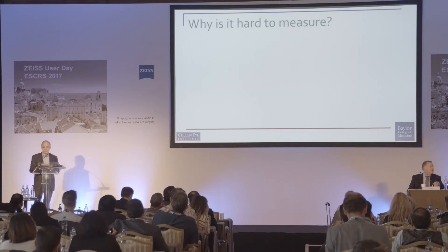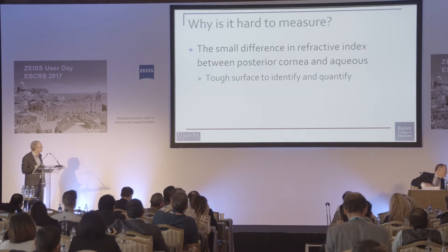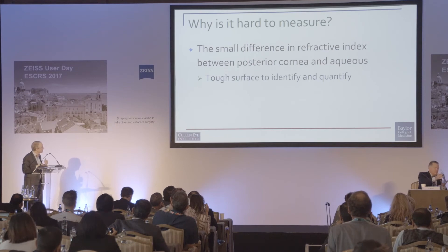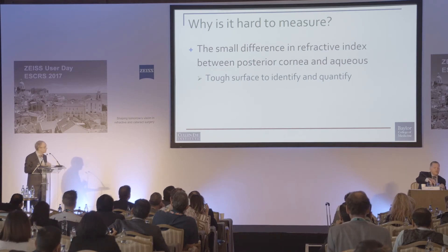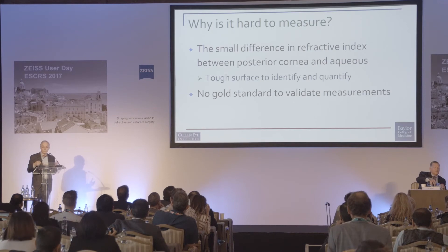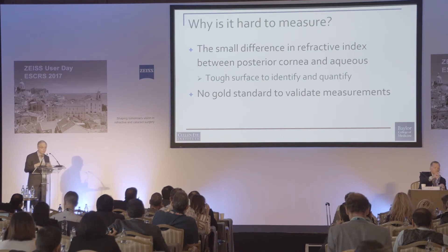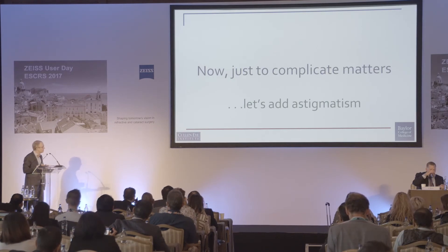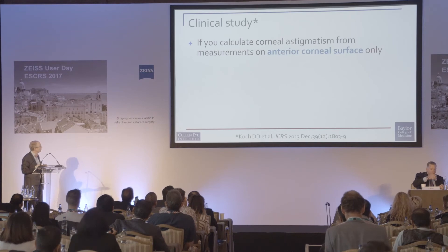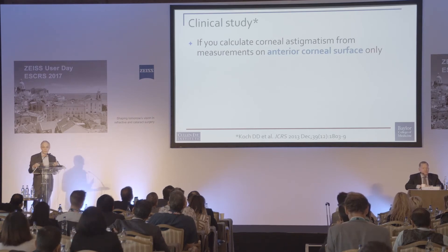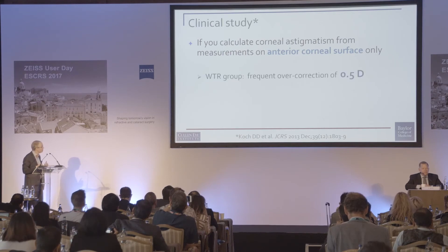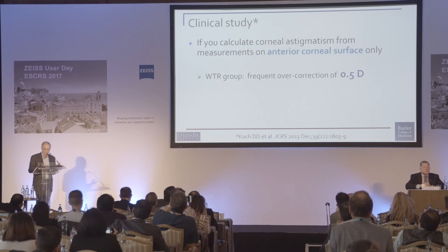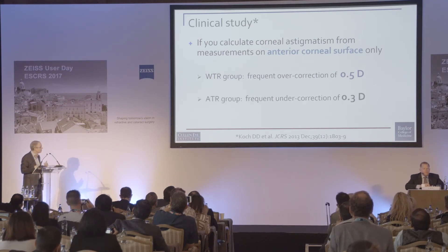Why is the posterior cornea hard to measure? Because there's such a small difference in the refractive index between the posterior corneal surface and the aqueous, so it's tough to identify and quantify that surface — and there's no gold standard to compare against. Complicating matters further, if you measure astigmatism based on the anterior corneal surface alone, you'll overcorrect with-the-rule patients and undercorrect against-the-rule patients.